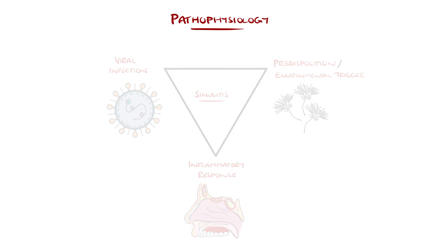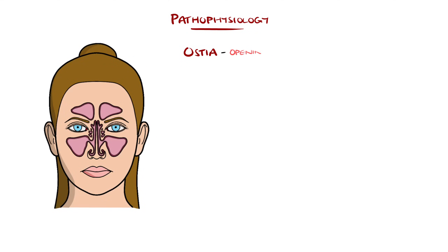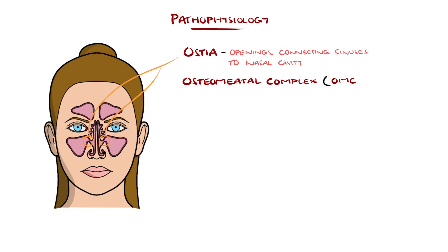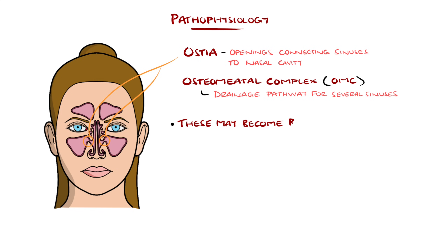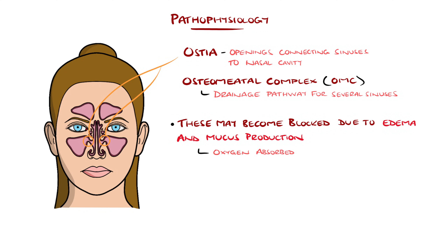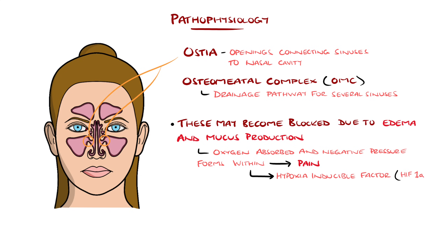The ostia, which are the openings connecting the sinuses to the nasal cavity, and the osteomeatal complex, which is a drainage pathway for several sinuses, can become blocked due to the edema and mucus production associated with the inflammation. With a blocked ostium, oxygen within the sinus is absorbed into mucous membranes, generating a negative pressure, which causes pain and also releases hypoxia-inducible factor, which contributes to inflammation and mucus production.